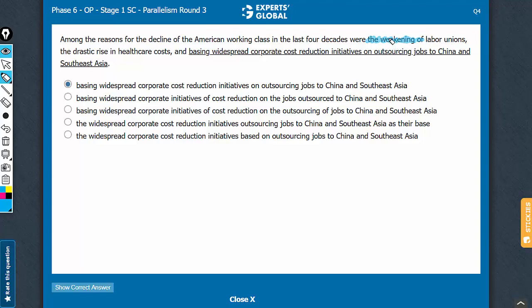So, the weakening of something, that's a noun. The drastic rise in something, this is also a noun here. So, reasons were weakening, rise, and basing would be a verb here. Answer choices which include 'basing' cannot be correct. It is a list of nouns.